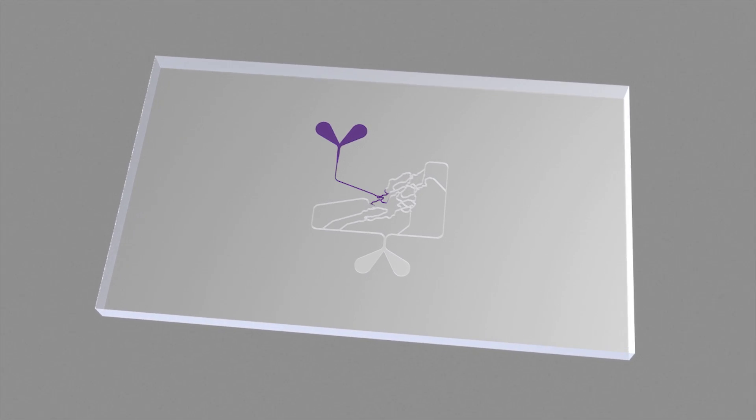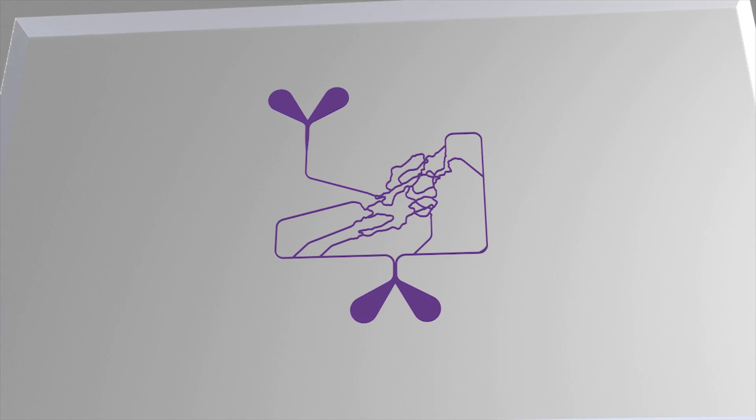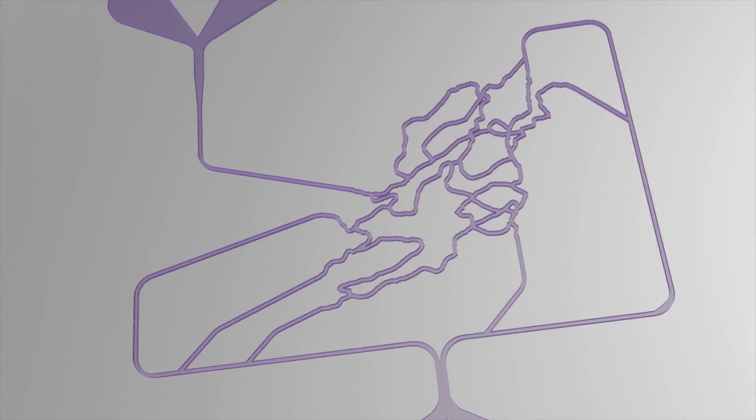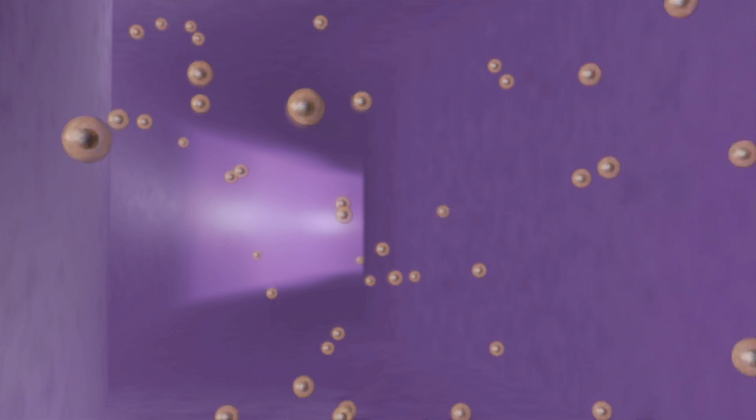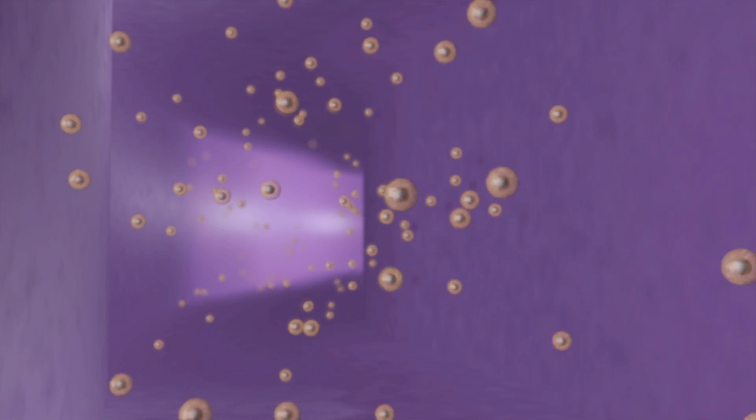Preparing CineVivo chips for an assay starts with injecting the network with a cell matrix solution, followed by a wash to leave the channel walls coated with the matrix. Next, the cells of interest are introduced, in this case, endothelial cells.